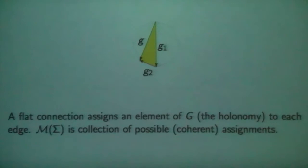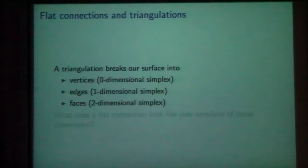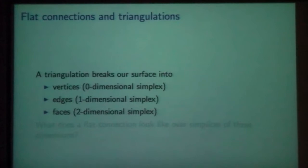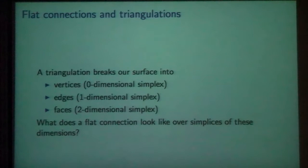By 'consistent' I mean: since the connection is flat and each triangle is simply connected, the total holonomy around that triangle should be trivial. So in this picture, g1 times g2 should equal g3. The idea for a finite-dimensional construction is to start with a triangulation and reconstruct our surface by piecing together these small triangles. Since we're interested in the moduli space of flat connections, it makes sense to look at the moduli space of flat connections over each piece — the vertices, edges, and triangles.